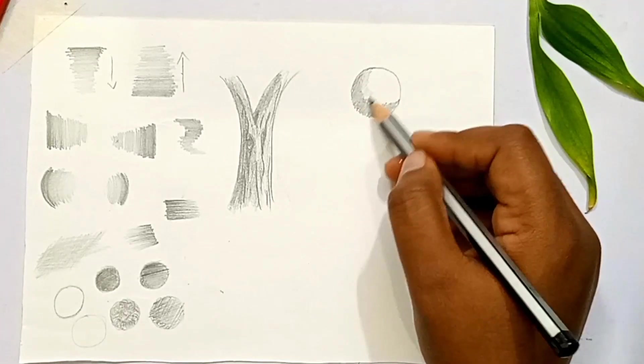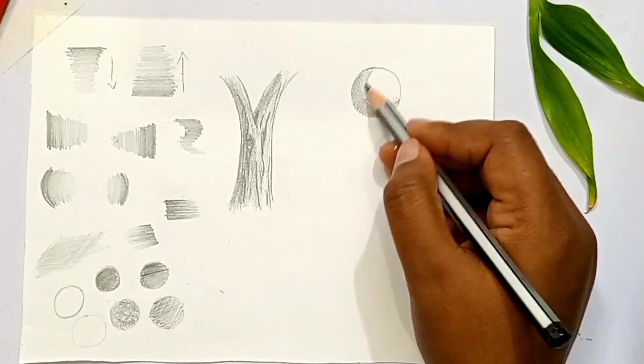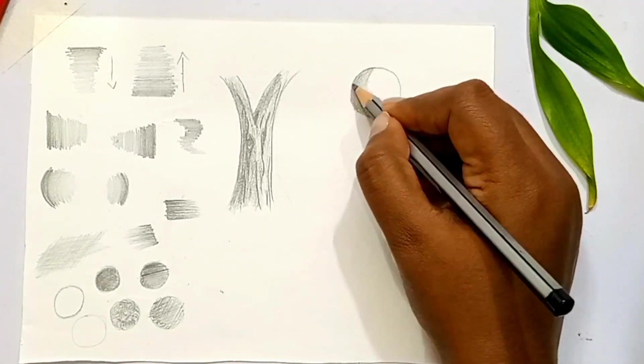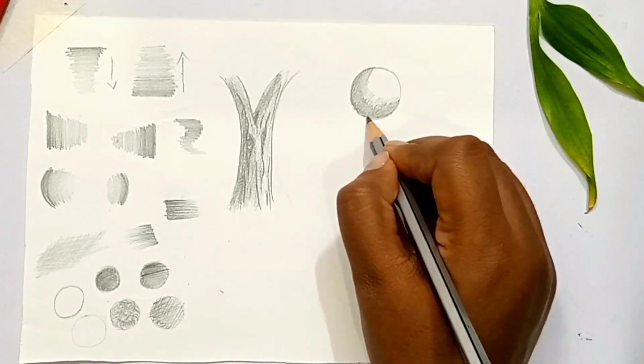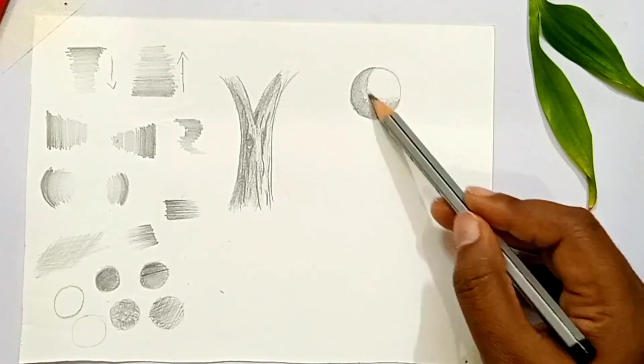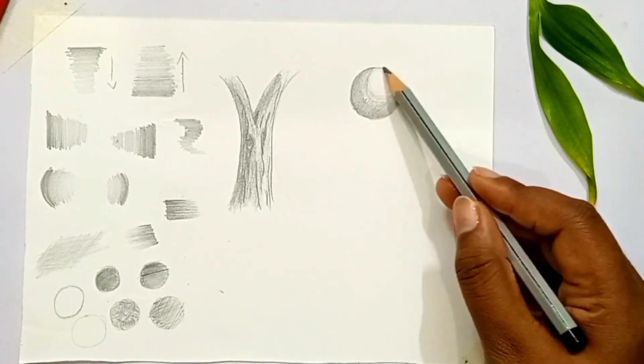When you draw the object, one side dark and one side light. This is simply a rough figure to show you how to use it, and when you practice, you definitely have to practice it.